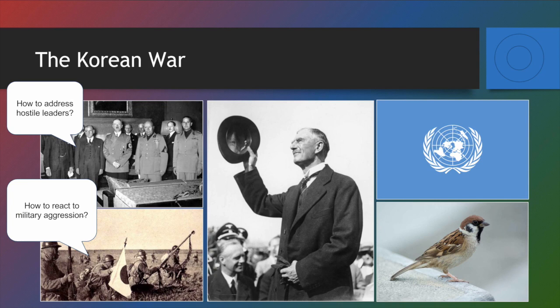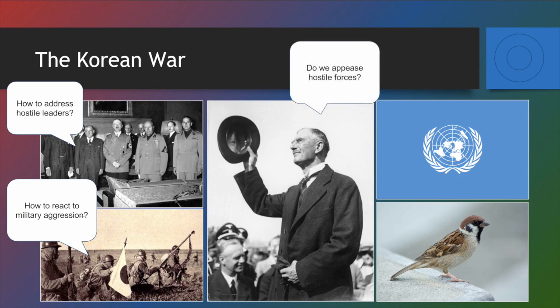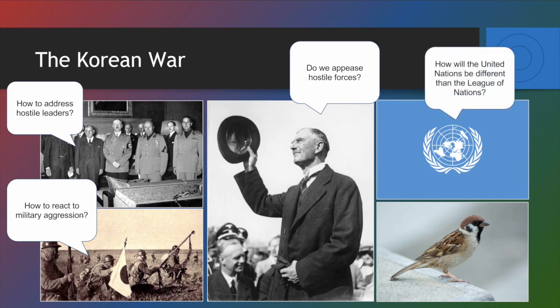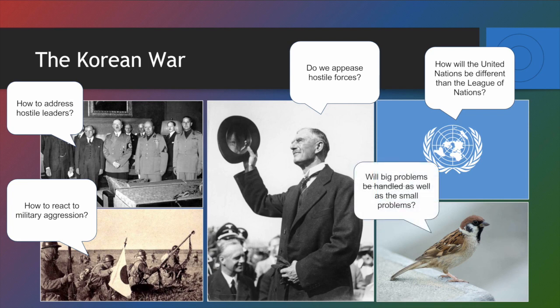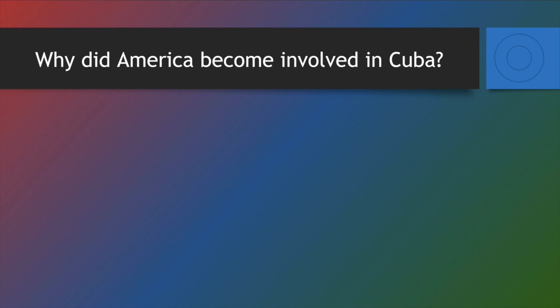Remember this guy in the center — Prime Minister Chamberlain. With hostile forces, are we going to appease them? Remember, this is a core topic in chapter three on why international peace collapsed. You may not recognize this flag, but it is the flag of the United Nations. One of the big questions is how will the United Nations be different from the League of Nations? And then just for fun — why did I put this sparrow? Because I want you to remember how big problems, as well as small problems, can be handled on the new international stage following World War II.